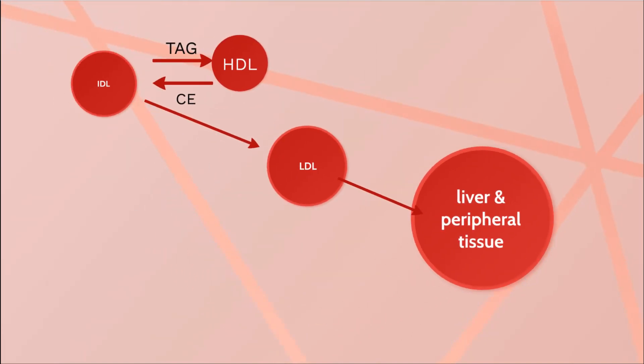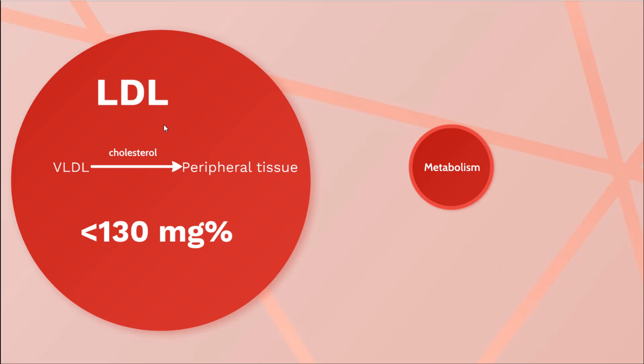LDL is called bad cholesterol because it increases the cholesterol level in peripheral tissue, raising the risk of atherosclerosis. If there is excessive accumulation of LDL, macrophages loaded with cholesterol turn into foam cells, which initiate atherosclerotic plaque formation. This increases the risk of coronary artery disease, cerebrovascular disease, and other conditions — so LDL has a significant adverse effect on health.